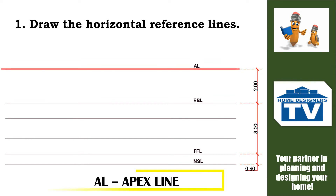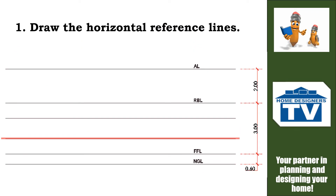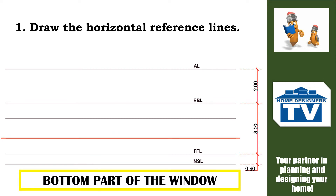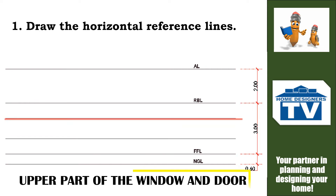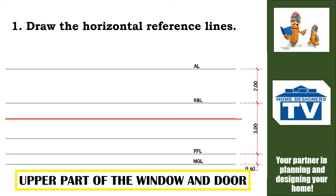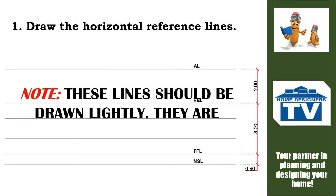AL refers to the apex line. The apex line is the highest part of the roof system of the house — usually this is the ridge. You may have more than one apex line. Next are the bottom part of the window, and the upper part of the window and door. Typically, the topmost part or header of doors and windows are aligned with each other at 2.1 meters from the FFL, or 2 centimeters and 1 millimeter in a drawing using scale 1 to 100. Bear in mind that these lines should be drawn lightly — they are construction lines.